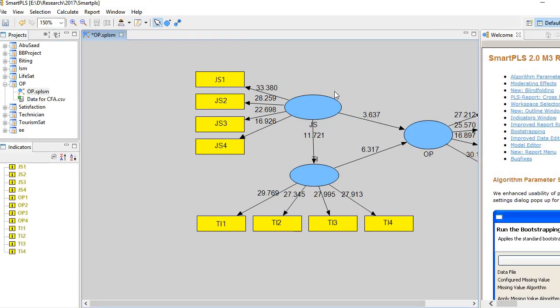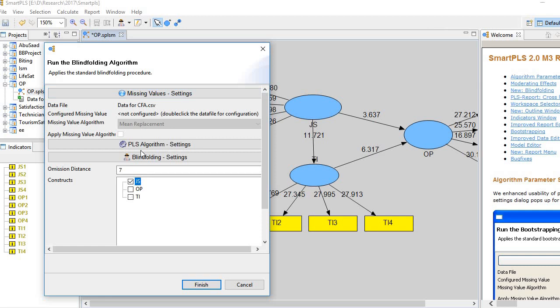So this is our model and we want to estimate Q-square of this model here. OP is performance, TI is terminal intention and JS is job satisfaction. So go to calculate, then blindfolding and here select the endogenous variables. So there are two endogenous variables. First one is PI and second one is OP. And as far as the omission distance is concerned, I am going to use 7. So let's start that.